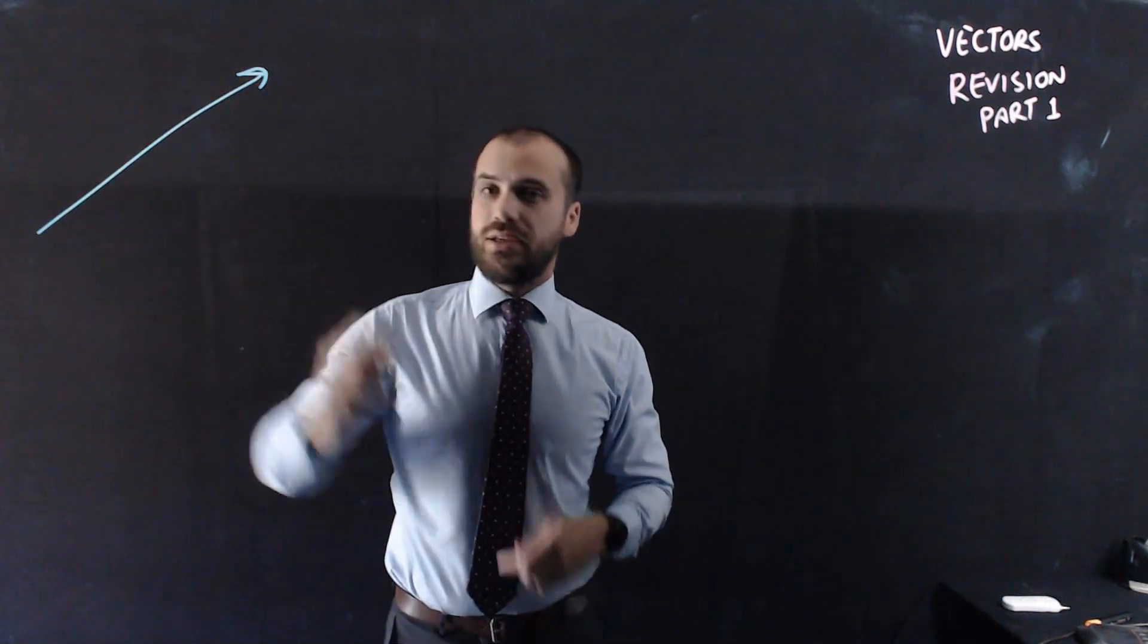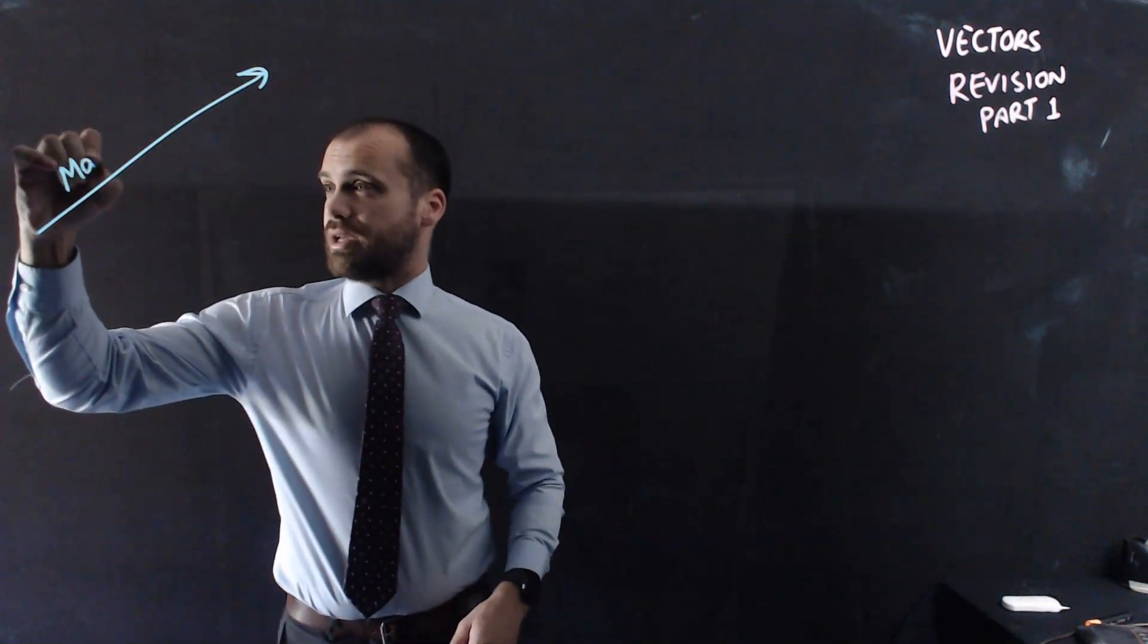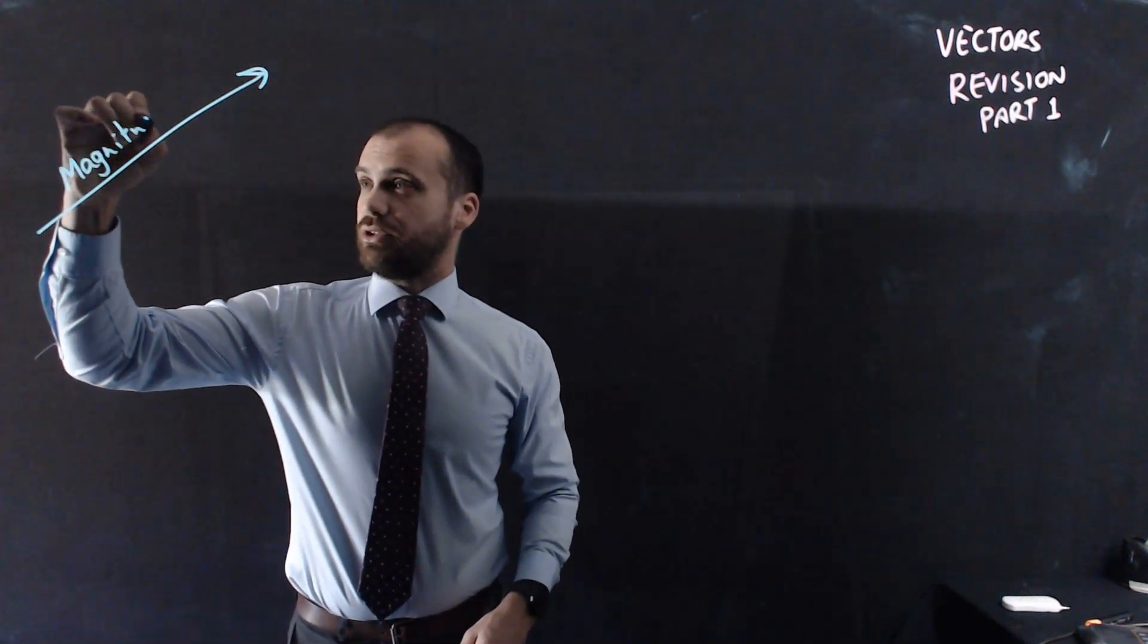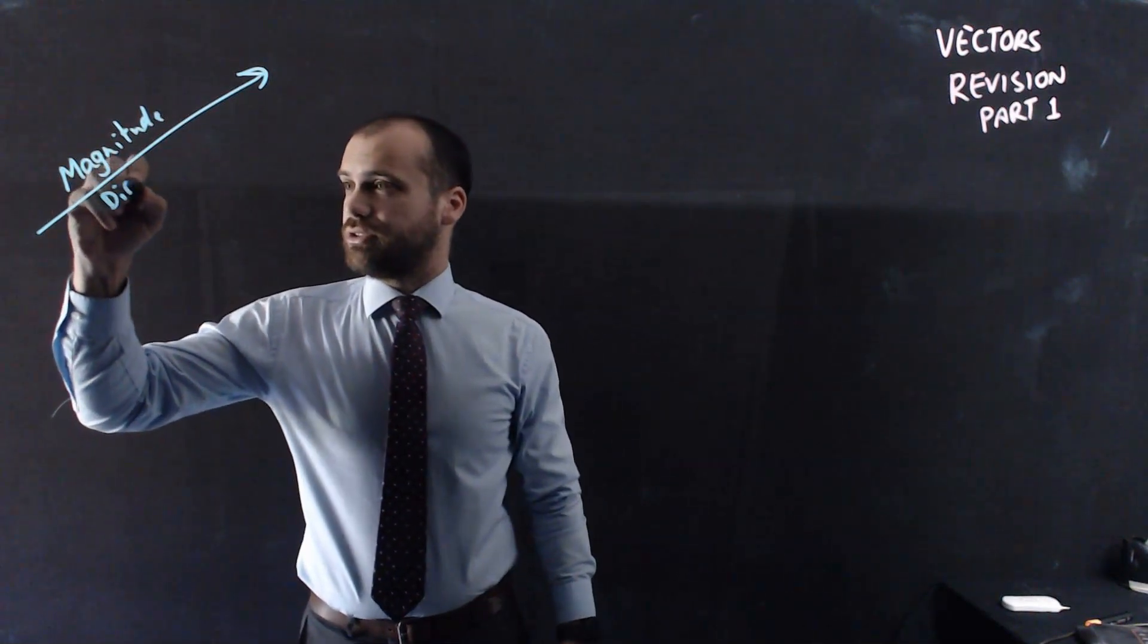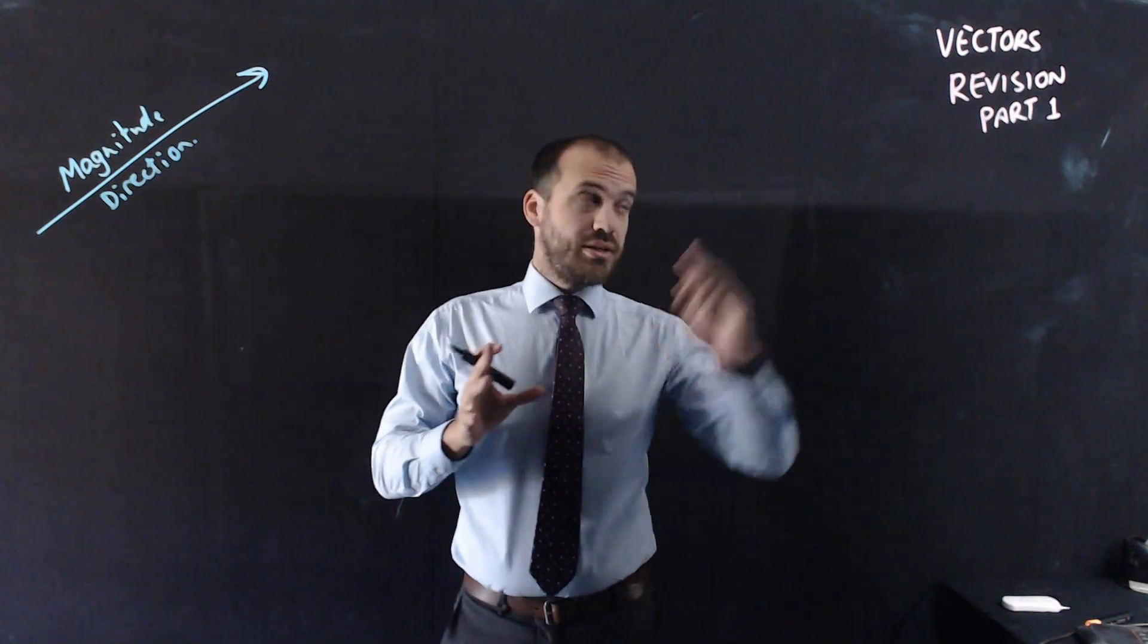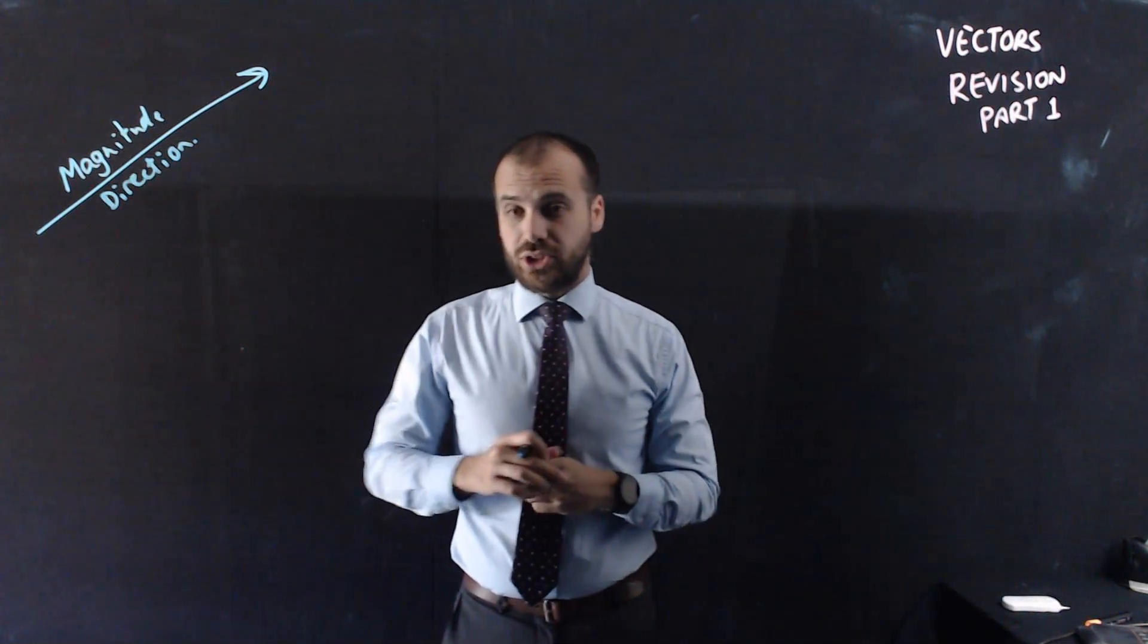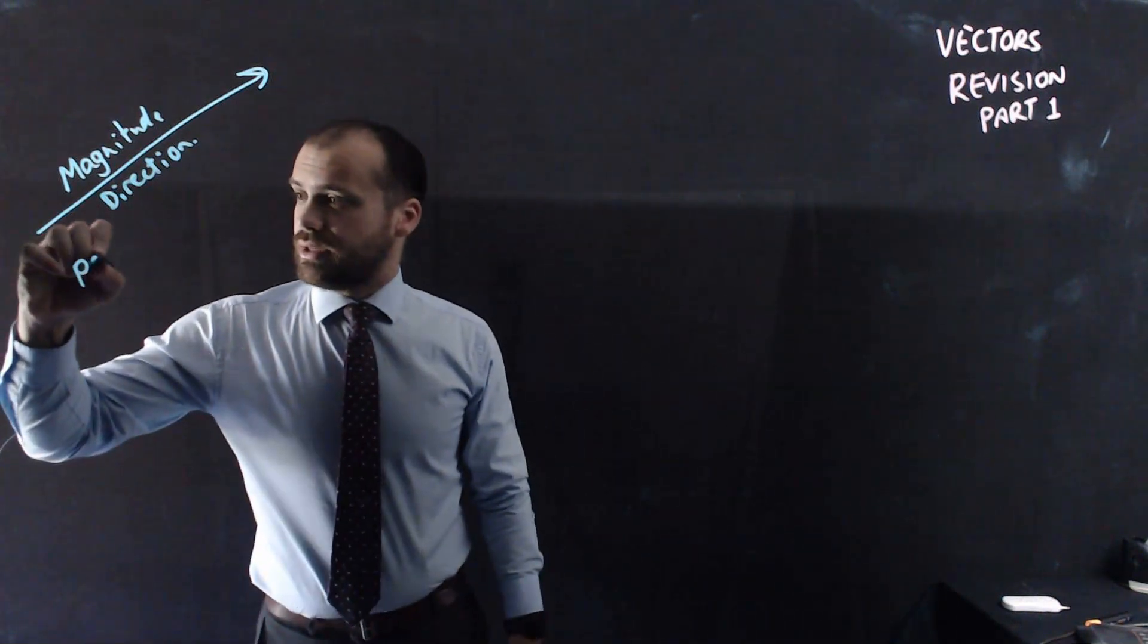A vector is an arrow. Now, an arrow has two things. It has magnitude, that's how long the arrow is, but it also has direction. Those are the two things that vectors have, magnitude and direction. Now, something that a vector does not have is position.